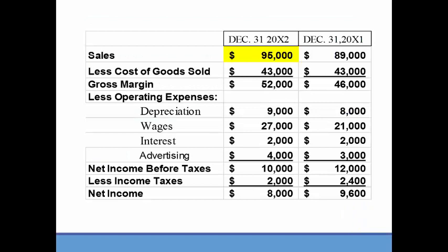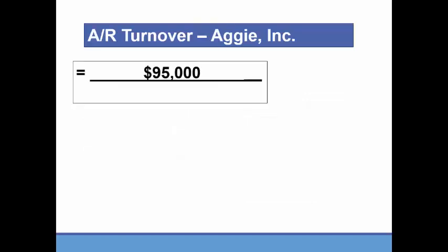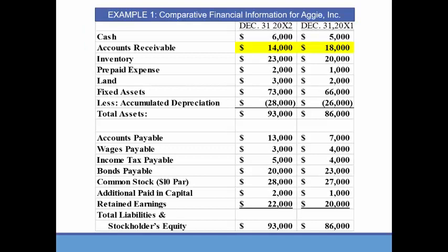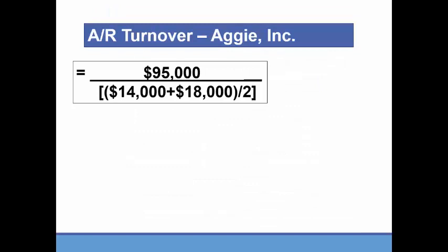In the numerator, all we need from the income statement is sales of $95,000. In the denominator, we'll go to the balance sheet and look at the accounts receivable account. Accounts receivable ended at $14,000 and began at $18,000 — because what we ended 20X1 with is what we started 20X2 with. So we average them: $14,000 plus $18,000 divided by 2, and we get an answer of 5.94 times.